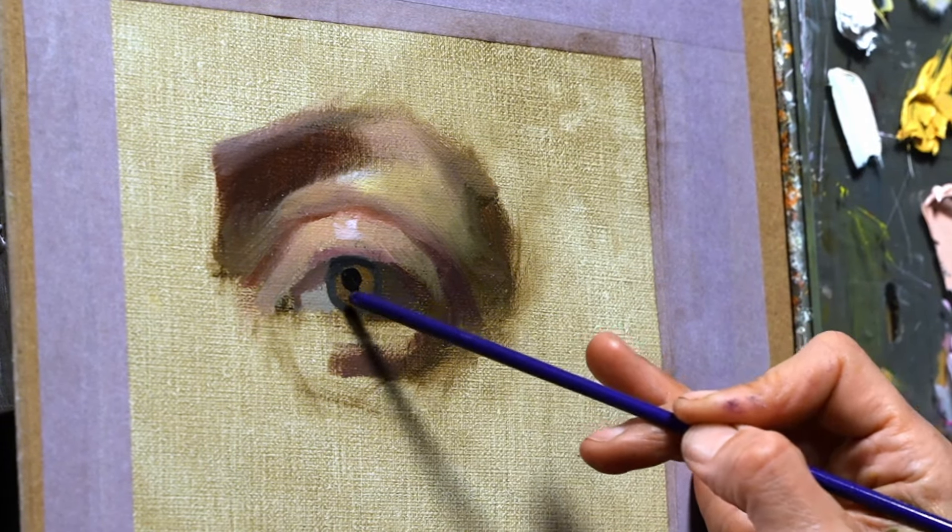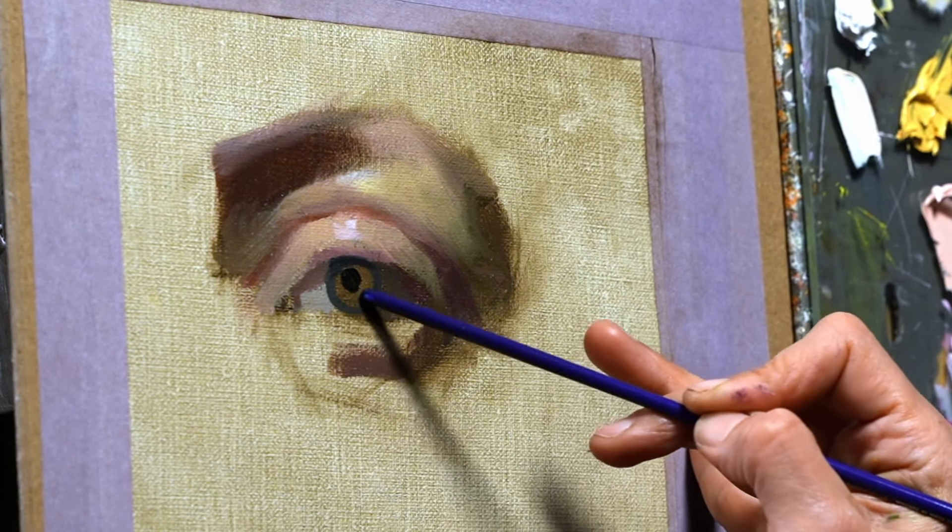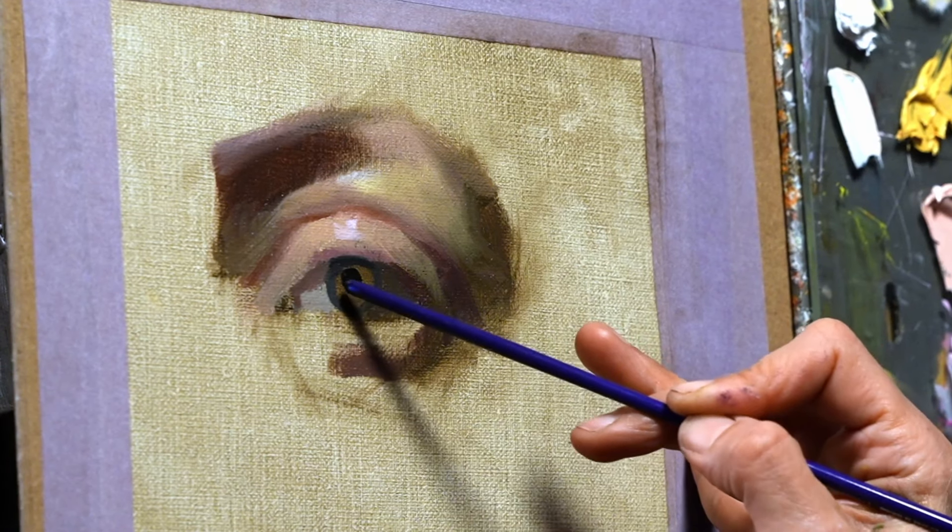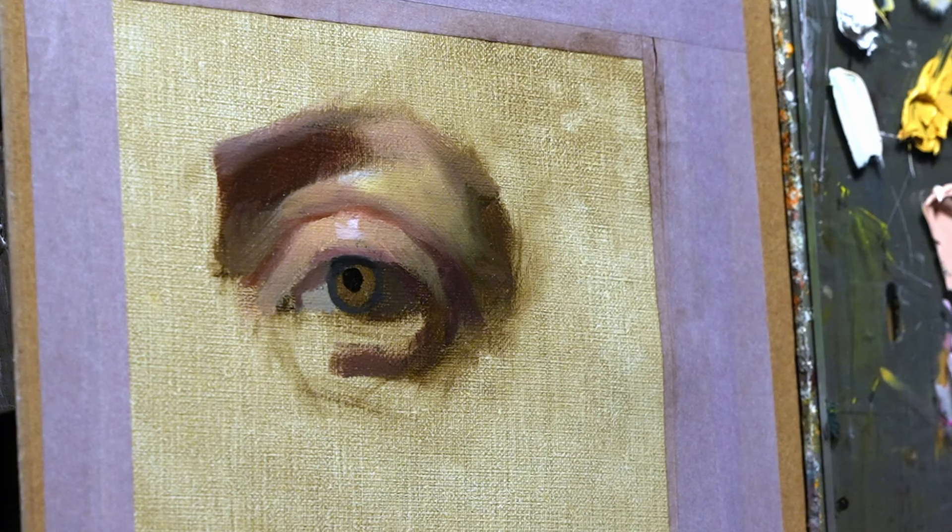The lighter values for this particular eye are going to be down here and the darker values are on top. That can be a little bit different from the way that a solid form is constructed.